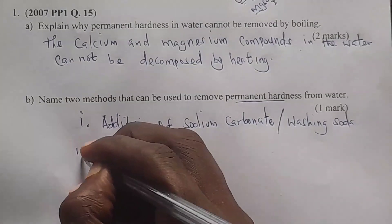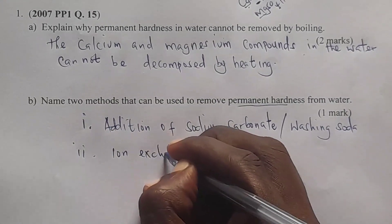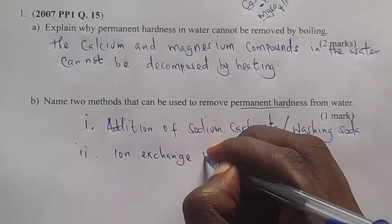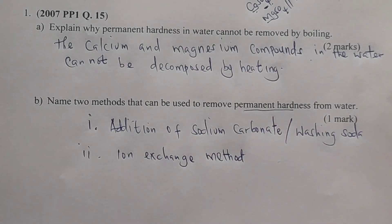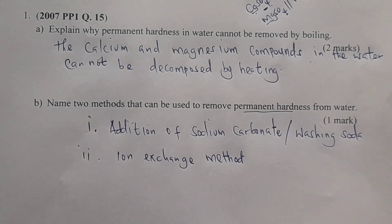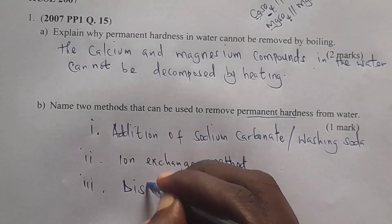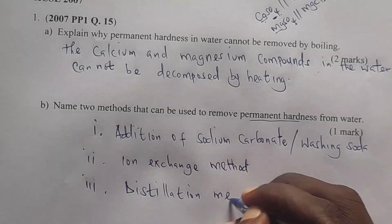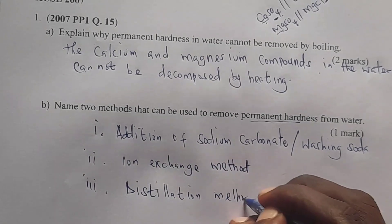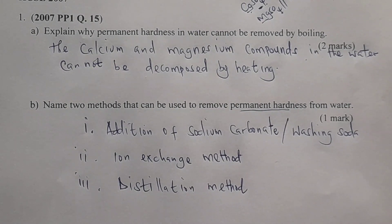Number two, we are having the ion exchange method. The ion exchange method removes both types of hardness, which means it can remove permanent hardness. The last one is the distillation method. So we are having these three methods which can be used to remove permanent hardness.